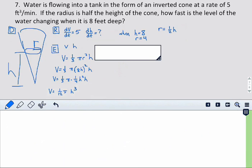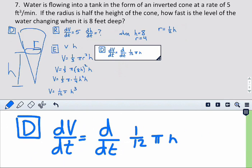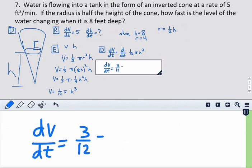All right, so now we can go ahead and derive this. So, we get dv over dt equals the derivative with respect to t of one-twelfth pi h cubed. So, dv over dt. We have constant multiple one-twelfth, power rule, so we actually have three-twelfths pi h squared times the derivative of h with respect to t.